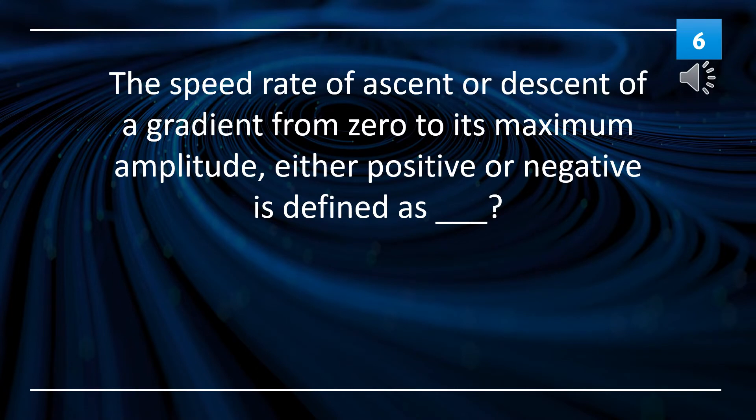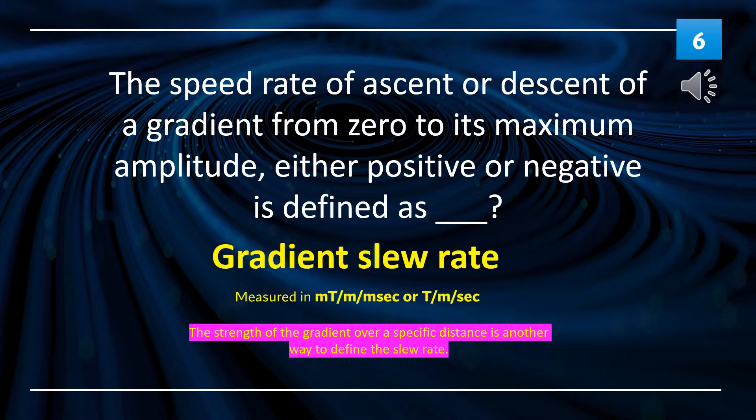The speed rate of ascent or descent of a gradient from 0 to its maximum amplitude, either positive or negative, is defined as gradient slew rate, which is measured in millitesla per meter per millisecond, or tesla per meter per second.